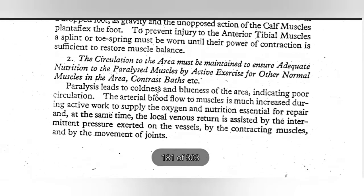The second principle: circulation to this area must be maintained to ensure adequate nutrition to the paralyzed muscle by active exercise for other normal muscles in this area. Paralysis leads to coldness or blueness in this area, indicating that circulation is poor. Arterial blood flow to the muscle must be increased during active work to supply oxygen and nutrition essential for repair. Venous return is assisted by the intermittent pressure exerted on vessels by movement of the joint.